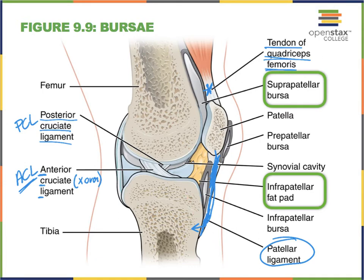Here we have a bursa that sits between a hard bone—the patella—and some ligaments interconnecting our bones. And here we see another bursa separating a hard spot from a softer spot. That's what the bursae do.